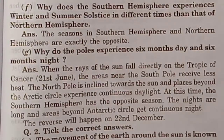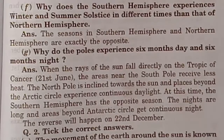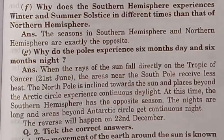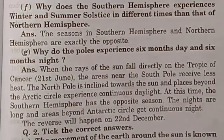Why do the poles experience six months day and six months night? When the rays of the sun fall directly on the Tropic of Cancer on 21st June, the north pole is inclined towards the sun and places beyond the Arctic Circle experience continuous daylight. The southern hemisphere has the opposite season — nights are long and areas beyond the Antarctic Circle get continuous night. The reverse happens on 22nd December.